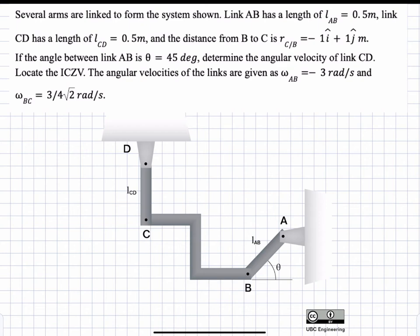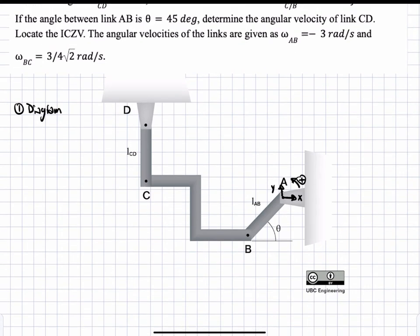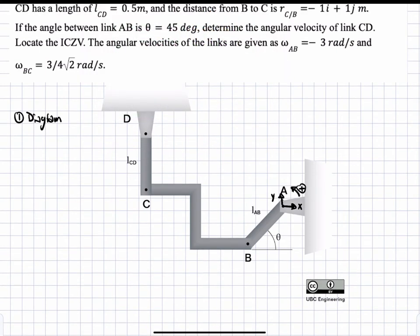First, we're going to start with the diagram and draw the velocities and our coordinate system on it. Our coordinate system will be located at A, so the x-direction will be to the right, the y-direction will be vertical, and rotation will be positive in the counterclockwise direction. Everything will be with respect to this point. We're given a negative omega AB, meaning it is going in the clockwise direction, as drawn in the green arrow, labeled omega AB. This causes a linear velocity at point B, which is perpendicular to arm AB, and we'll call that VB.